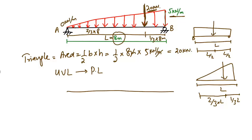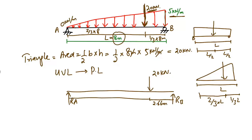So we can now label our diagram: support reaction RA on the left, support reaction RB on the right, with the 20 kN point load applied. The distance from the load to support B is 1/3 of 8, which equals 2.66 meters. The distance from support A to the load is 2/3 of L, which equals 5.33 meters. This step — finding the equivalent point load and its moment arm — is very important.